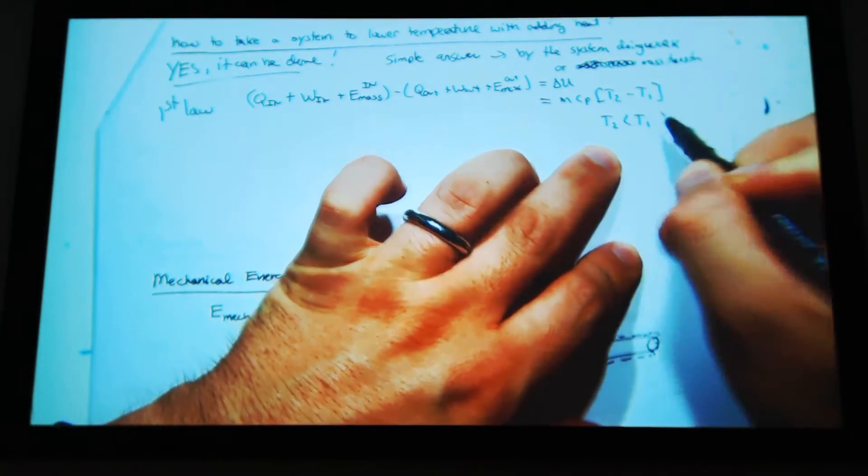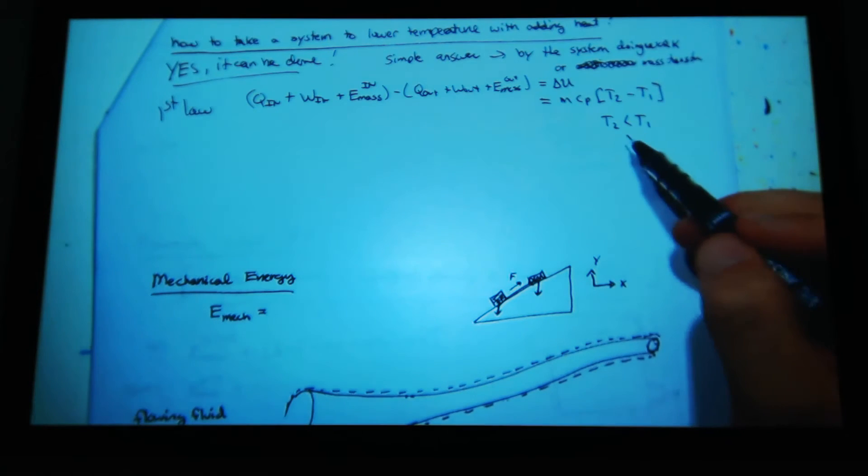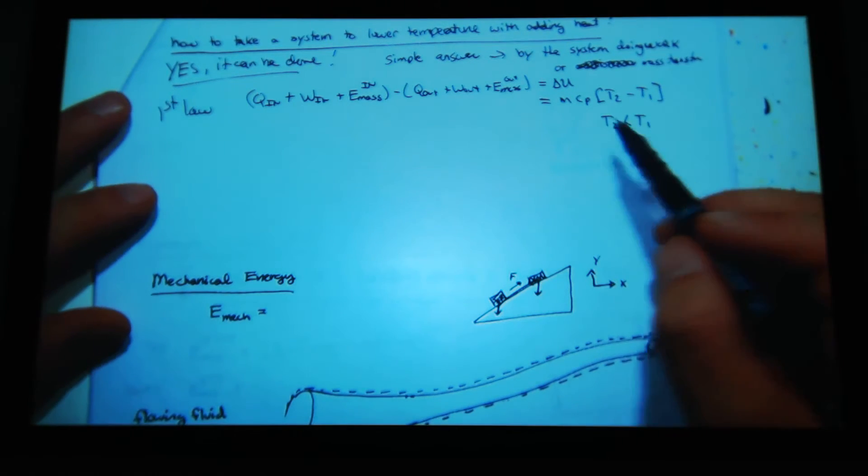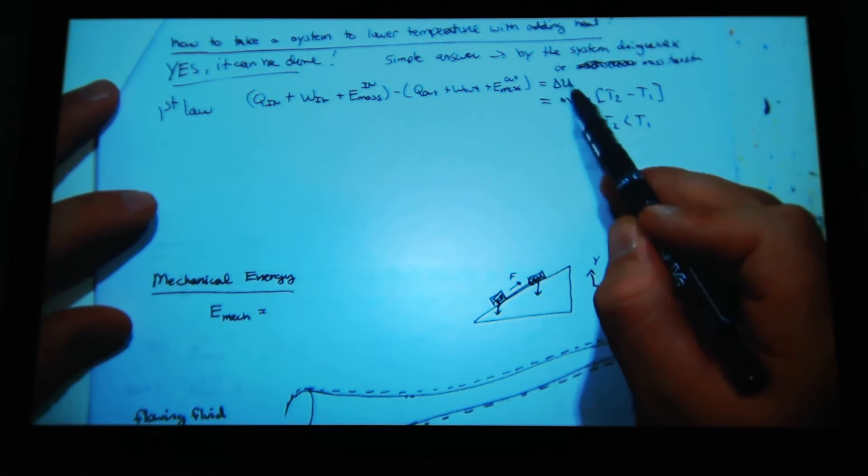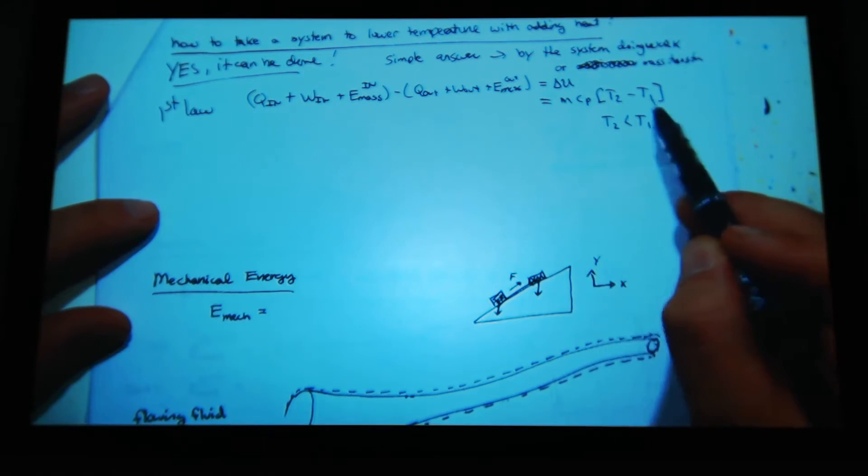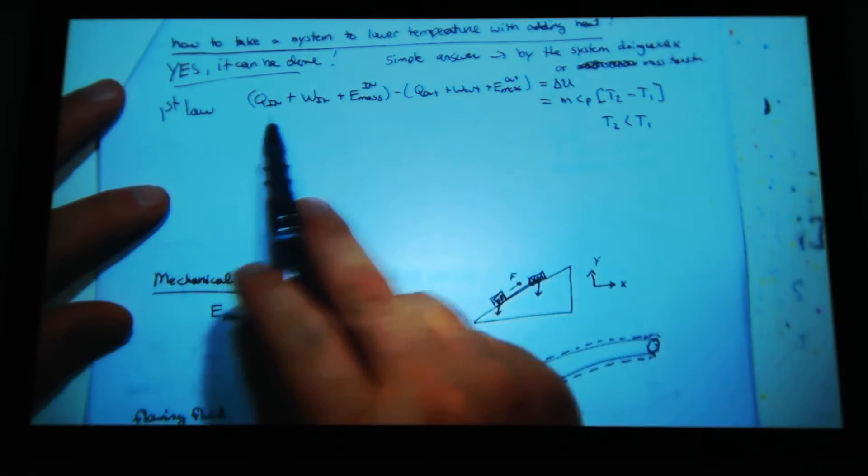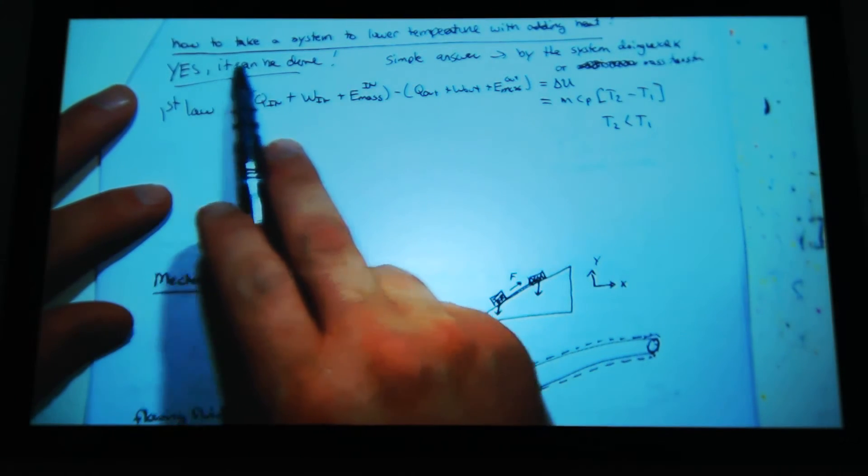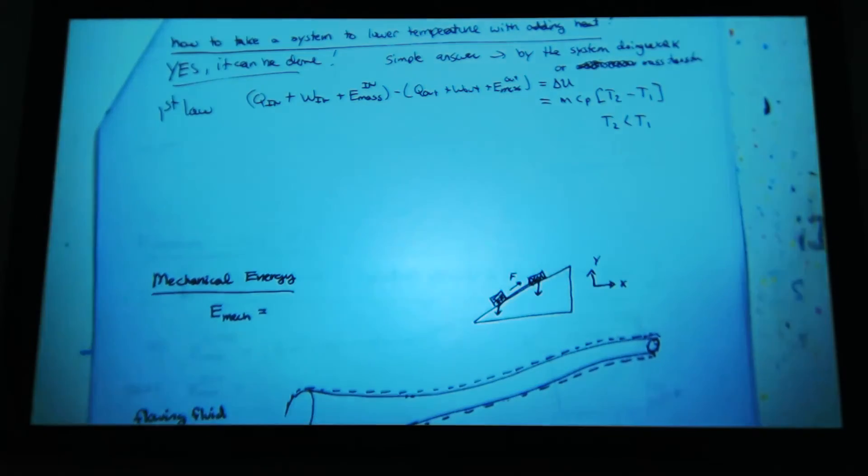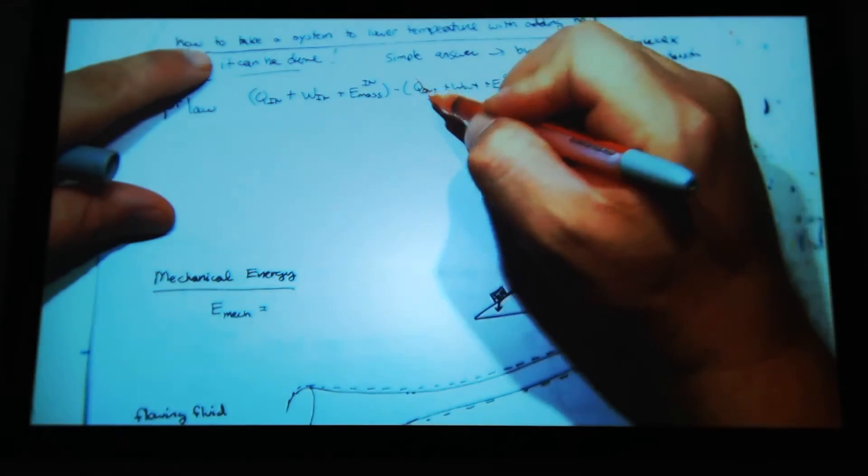So I could say T2 minus T1, and we're taking a system to lower temperature. So we're saying T2 is less than T1, so we're decreasing the temperature of our system. How to take a system lower temperature with adding heat? So we can just say we're not removing heat.